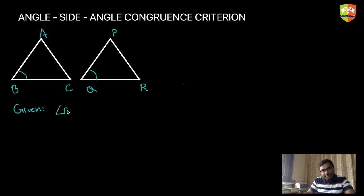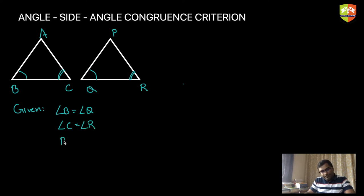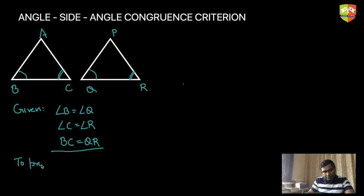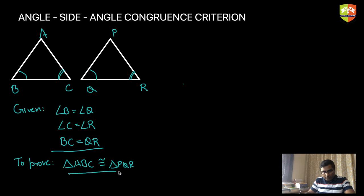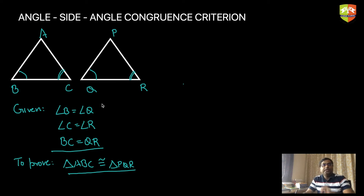What is given? Angle B is equal to angle Q; angle C is equal to angle R; and BC is equal to QR. These are the given conditions. What do we need to prove? We need to prove that triangle ABC is congruent to triangle PQR. Be careful with the order of points — that's very important.